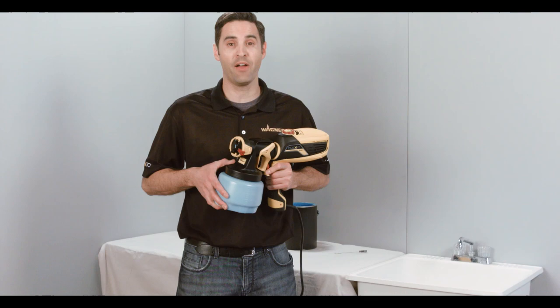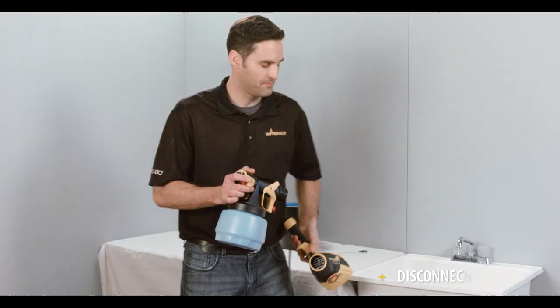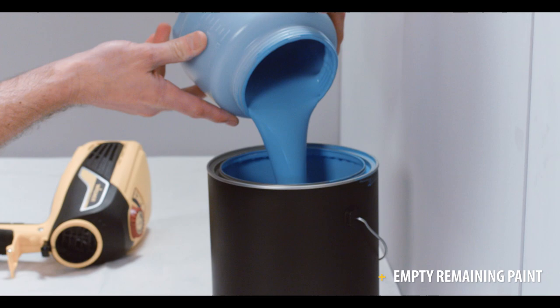First step, disconnect the front end from the turbine. After that, empty any remaining paint in the cup back to its original container.